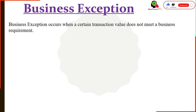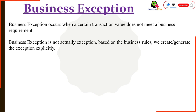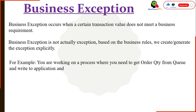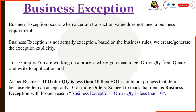A business exception occurs when a certain transaction value doesn't meet a business requirement. Business exception is not actually an exception based on errors — we create or generate the exception explicitly. For example, you are working on a process where you need to get order quantity from the queue and write to an application. As per business rule, if order quantity is less than 10, the bot should not process that item because the seller can accept only 10 or more orders. So we need to mark that item as a business exception with a proper reason, like 'order quantity is less than 10'.